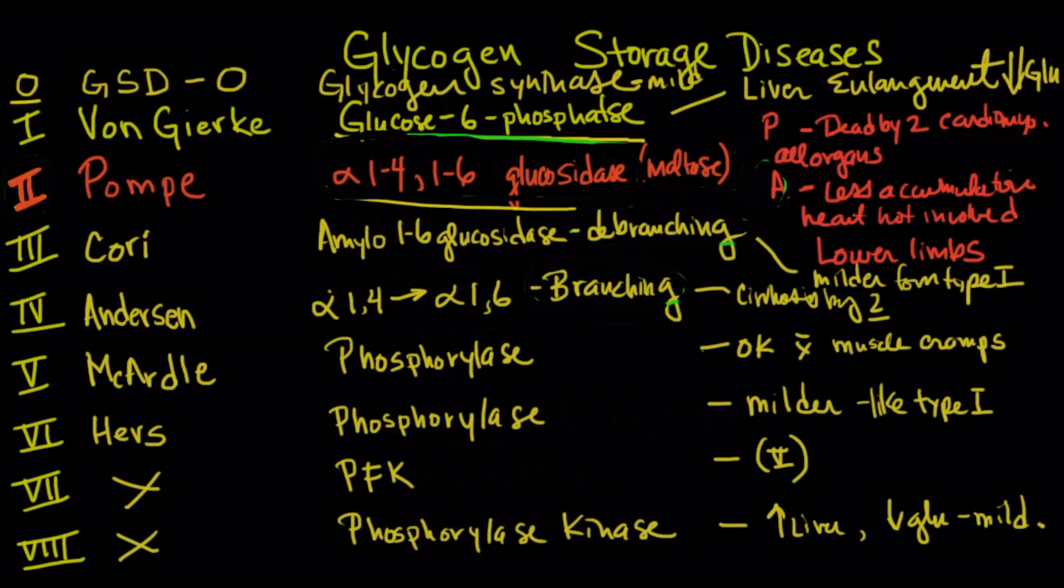Let's take a look here at the glycogen storage diseases. There's about eight of them. Actually, there's nine if you count zero. Each glycogen storage disease is a problem with an enzyme in the process of making the glycogen and specifically storing it. There's only one that's actually for making glycogen and all the other ones are storing it. So what happens is the glycogen accumulates in the liver and it can accumulate in different compartments and that causes different problems.